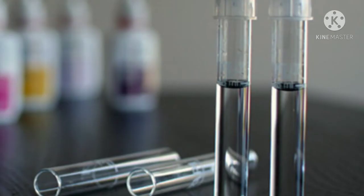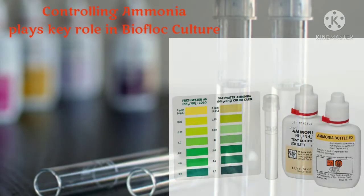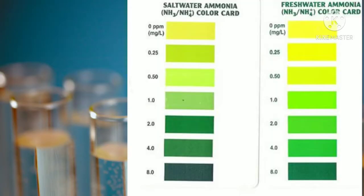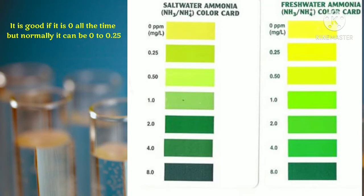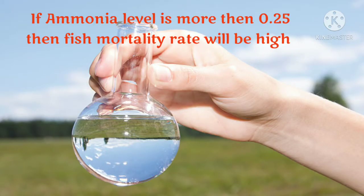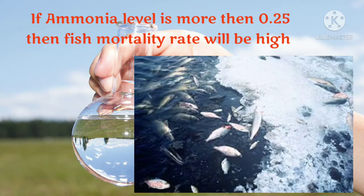The next one is ammonia — that is a very tough part of bio-floc. It should be 0 to 0.25; it shouldn't be more than that. If it is more than that, it might increase the mortality rate of fish.